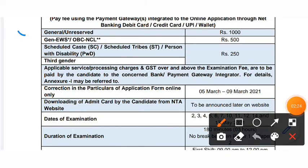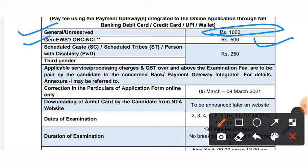Regarding the fee structure: General and Unreserved category will pay a fee of 1000 rupees. General EWS and OBC NCL candidates will pay 500 rupees. Scheduled Caste, Scheduled Tribe, or Persons with Disability (PWD) will pay 250 rupees.